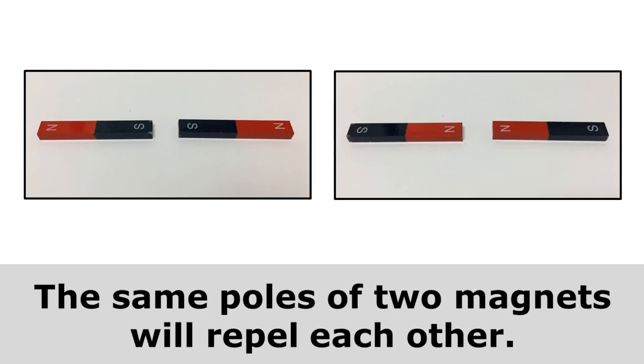The same poles of two magnets will repel each other. So if I put two south poles together, those will repel and push away from each other. Or if I put two north poles together, those will repel and push away from each other.